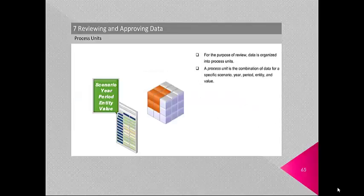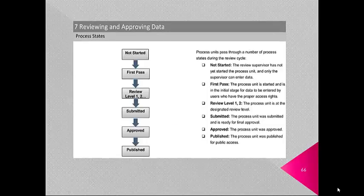For the purpose of review, data is organized into process units. A process unit is the combination of data for a specific scenario, year, period, entity and value. Process units pass through a number of process states during the review cycle: Not Started (the review supervisor has not started the process unit; only the supervisor can enter data), First Pass (process unit is started for initial data entry by users with proper access rights), Review Level 1 through 9 (process unit is at the designated review level), Submitted (ready for final approval), Approved, and Published (data is available for public access).